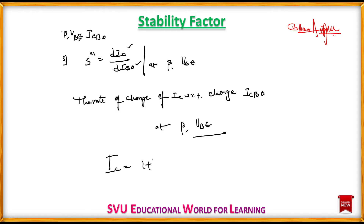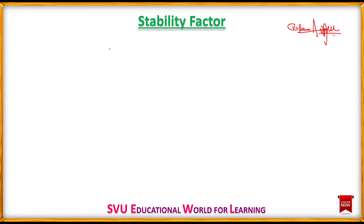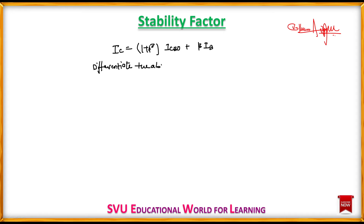We know that Ic is equal to (1 + beta) × ICBO + beta × Ib. This formula was already introduced in the thermal runaway concept. This is a very important formula. Now, to find the stability factor S, we differentiate this equation with respect to Ic.